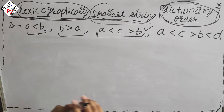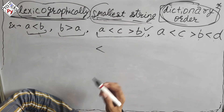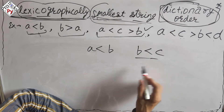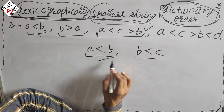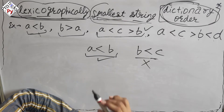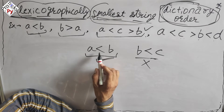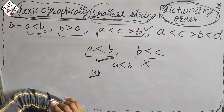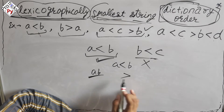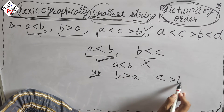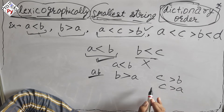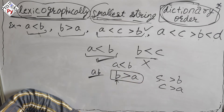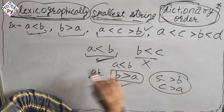Looking at the examples: for a less-than sign, 'a < b' is valid, but we want the lexicographically smallest — so 'ab' is correct. 'bc' would not be, because 'a' comes before 'b'. For a greater-than sign, we print 'ba'; we cannot print 'cb' or 'ca' because 'c' is not the smallest possible choice.